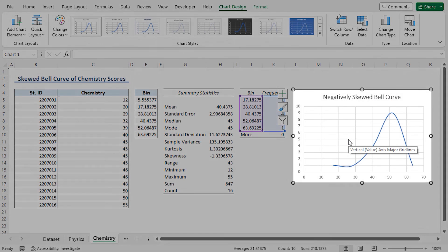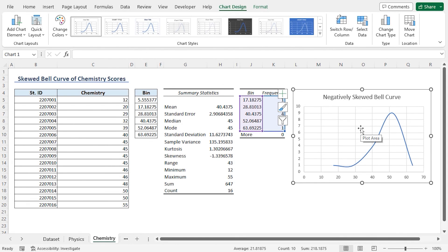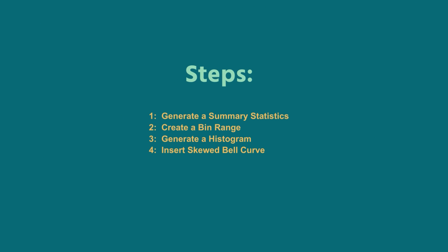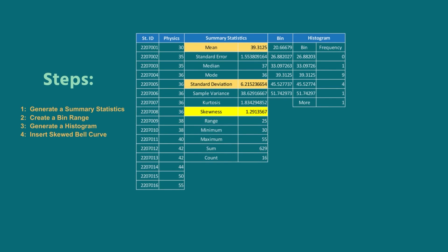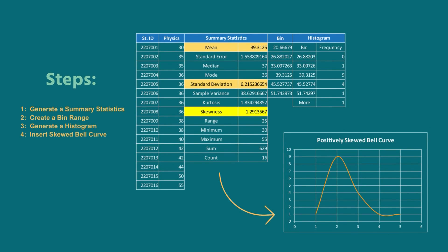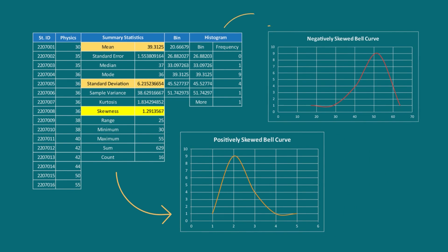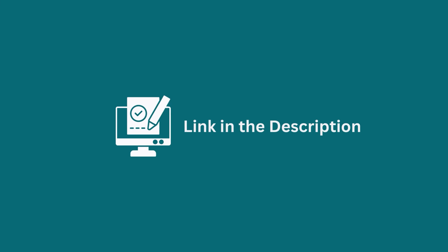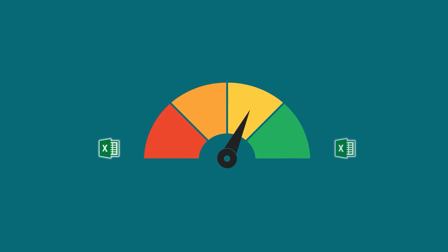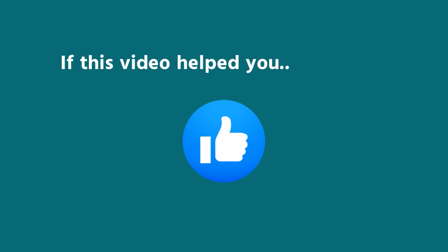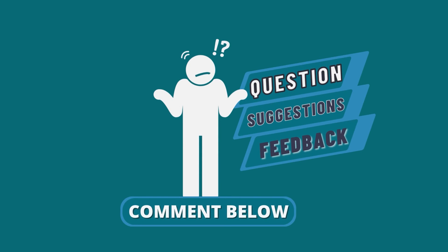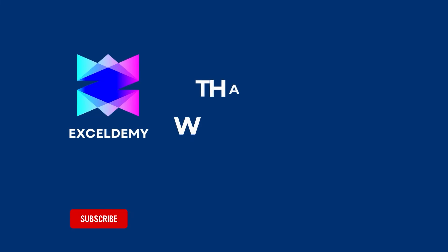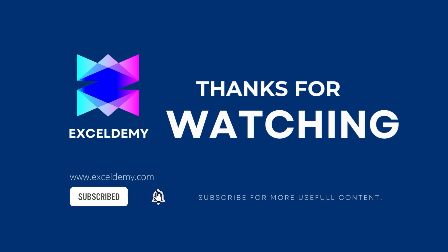That's it — we've obtained the skewed bell curve distribution of chemistry scores. In this demonstration, I have shown you a step-by-step guide on making a skewed bell curve. Hopefully, you can apply this knowledge to make your own skewed bell curve according to your requirement. Don't forget to download the practice workbook from the video description and try it out for yourself — it's a great way to improve your Excel skills. If this video helped you, give it a thumbs up. Leave a comment below for any queries, suggestions, or feedback. Visit xldemi.com for more information, and please consider subscribing to our channel. Hope to see you next time. Bye!